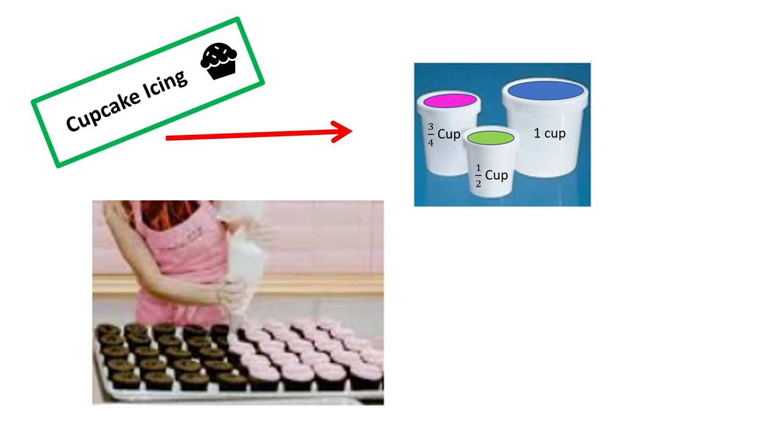only there are a bunch of different colors in different size containers. The pink icing container had three-fourths cup of icing, the green icing container had one-half cup of icing, and the blue icing container had one cup of icing. I plan on making 30 cupcakes. It's for my sister's party, and, you know, she's not having 30 guests, but I'm sure my dad will eat them off.